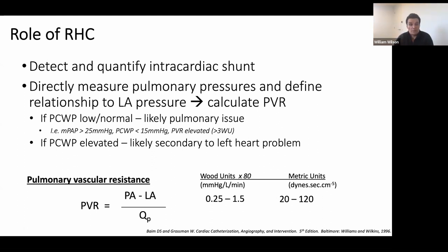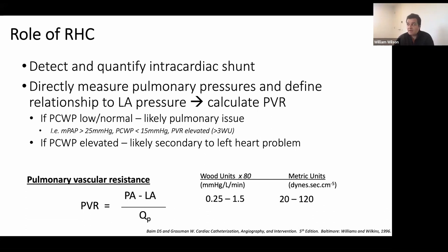Pulmonary vascular resistance is calculated as: mean PA pressure minus LA pressure (the wedge), divided by QP — pulmonary blood flow. In patients without a shunt, QP equals cardiac output. But if you have an ASD, VSD, or PDA, QP is higher than cardiac output. That's very important — otherwise you'll overestimate pulmonary vascular resistance and may make the wrong decision about whether to close a defect. Using cardiac output instead of QP may significantly overestimate PVR.